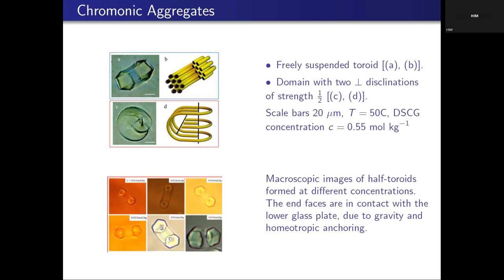Instead of the freely suspended shapes, these half-toruses are partial toruses that get stuck to the substrate. There is a competition between the surface energy in the water and the surface energy of the liquid crystal at the plate substrate — whoever wins is going to pull the torus toward contact with the liquid. We have done a lot of our studies and calculations, especially the characterization of shapes, with these half-toruses because they are a little bit easier to deal with. The different images happen at different concentrations, with attachment to the bottom plate mostly due to gravity and homeotropic anchoring.